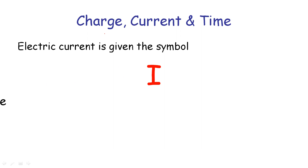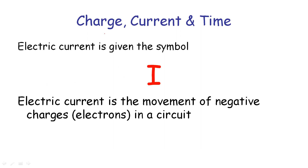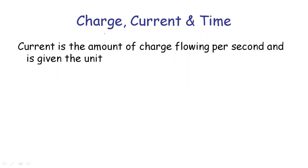Electric current is represented by the symbol I. Electric current is defined as the amount of charge flowing per second in a conductor. Current I is equal to Q divided by t.